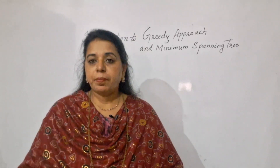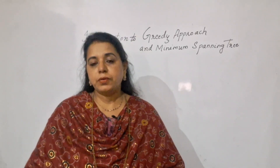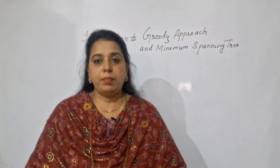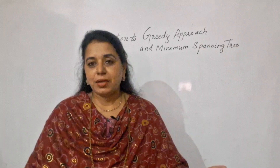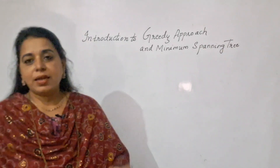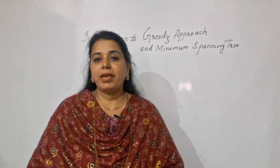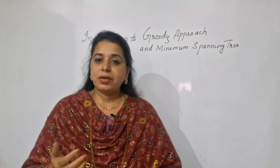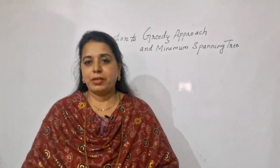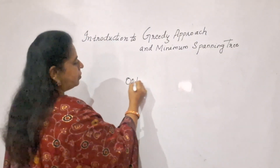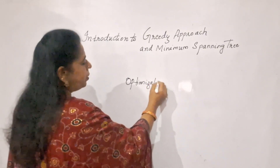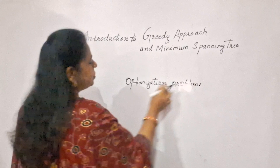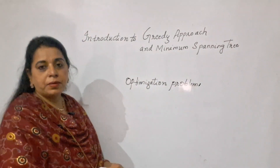Before learning those three algorithms, you should know what the greedy approach is. Since Prim's algorithm and Kruskal's algorithm are used to determine the minimum spanning tree, you should also know what a spanning tree and a minimum spanning tree are. The greedy approach is used to solve an optimization problem — to come out with an optimal solution.